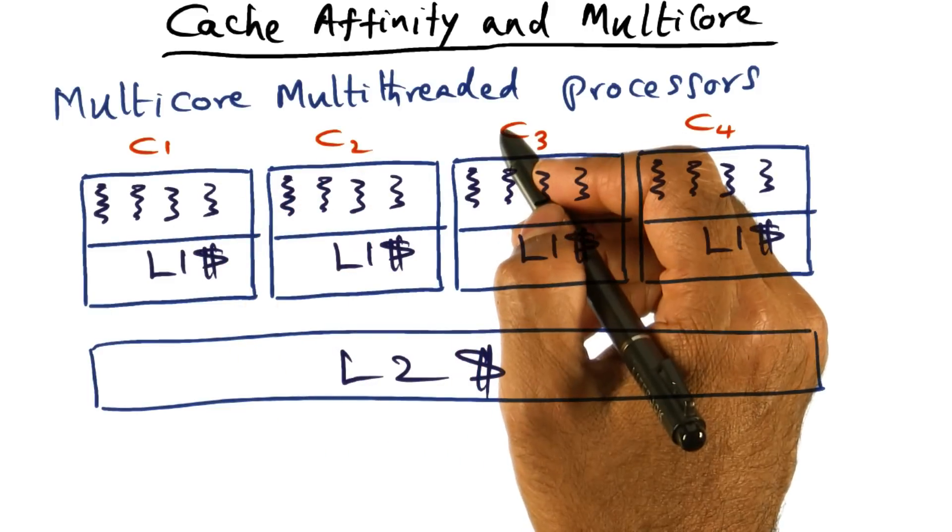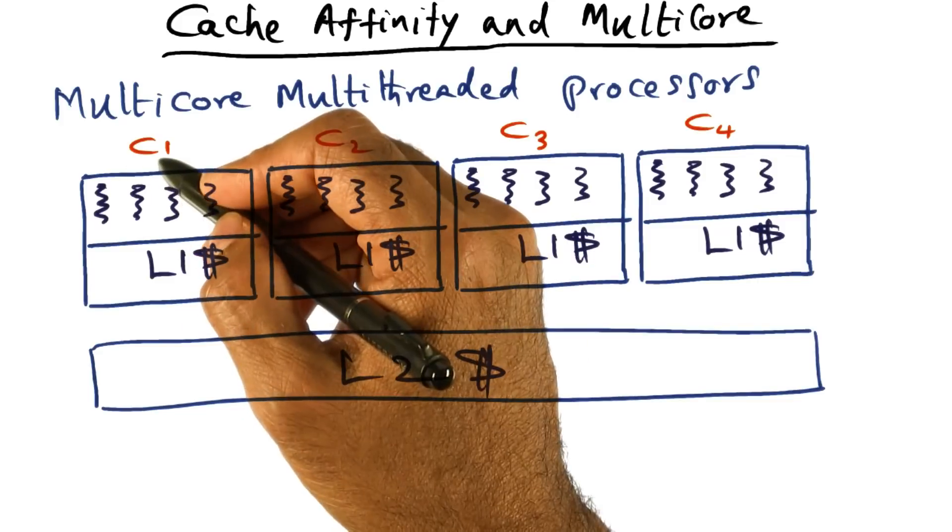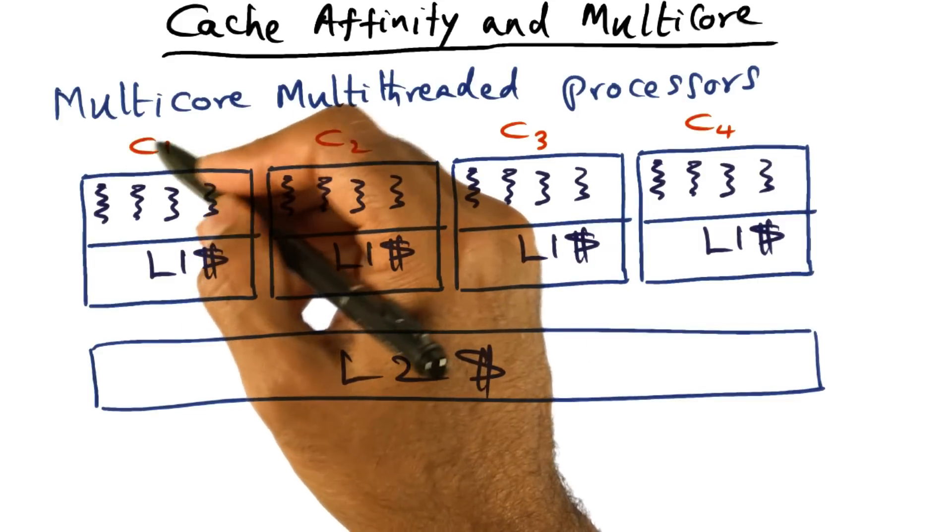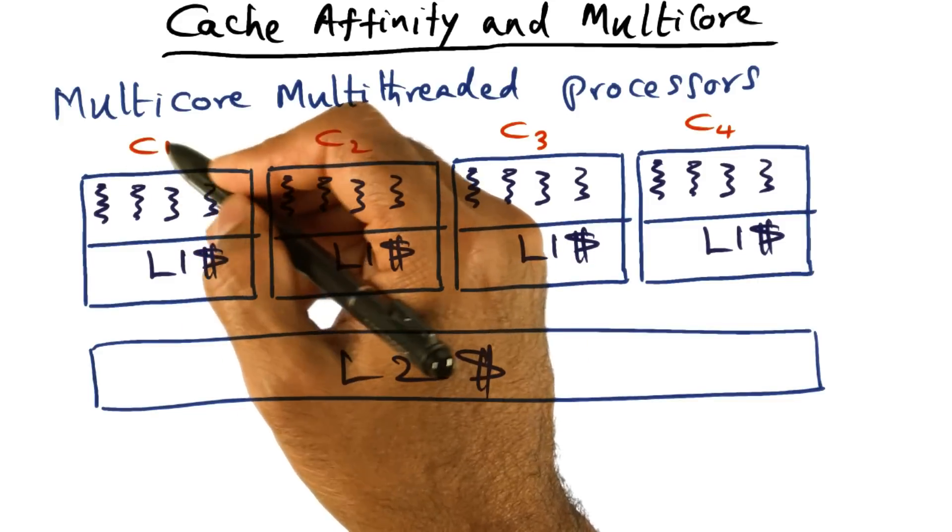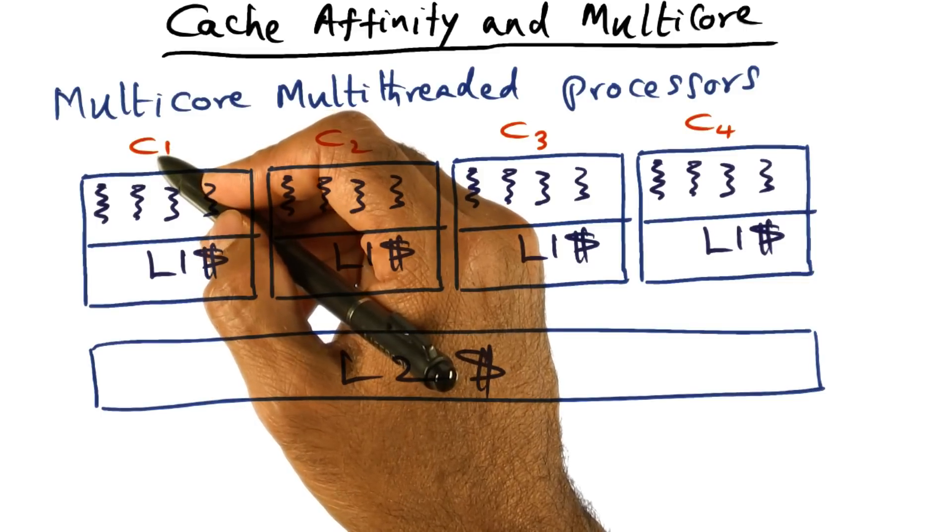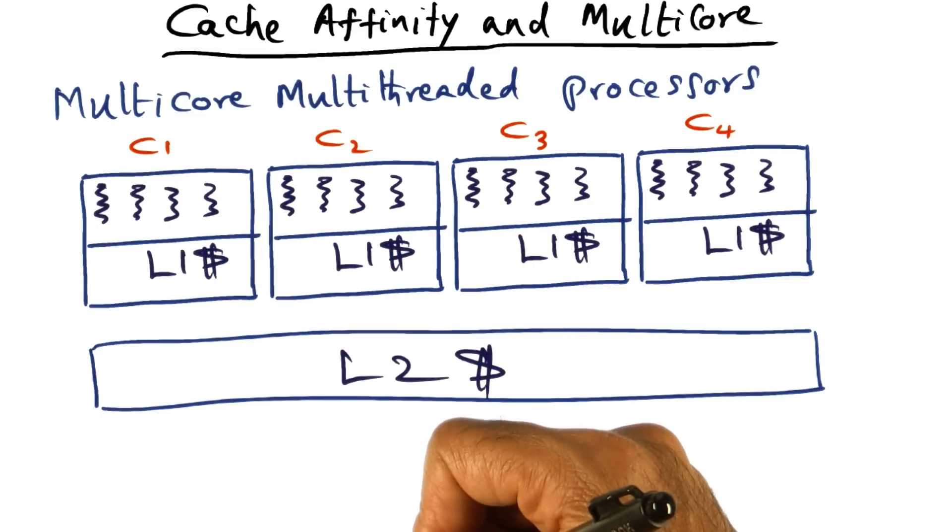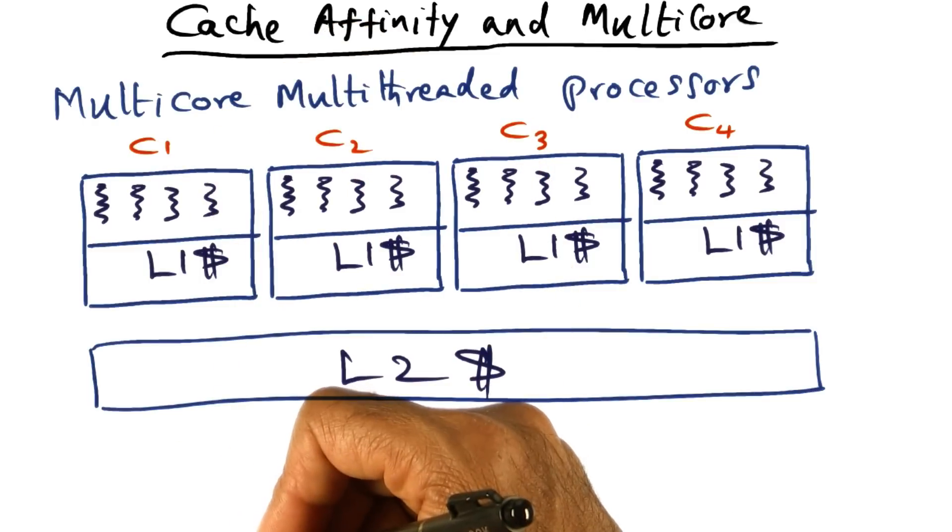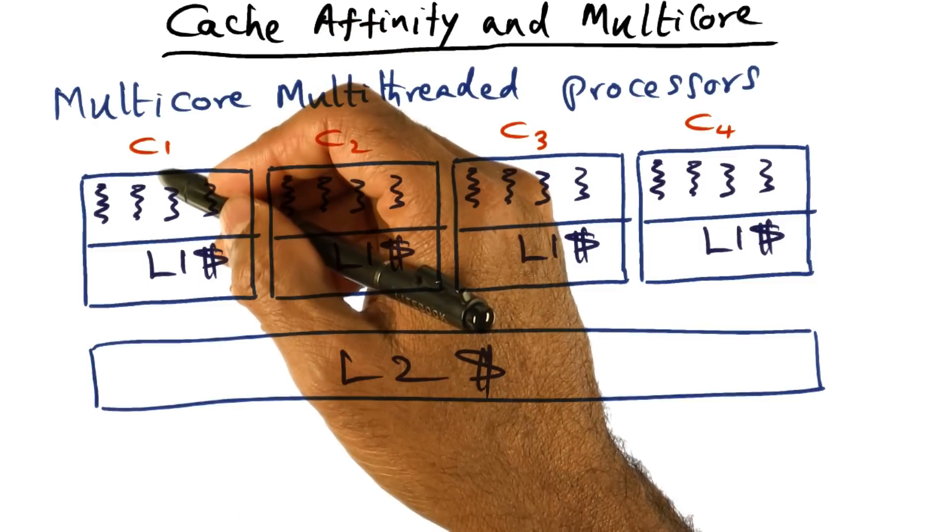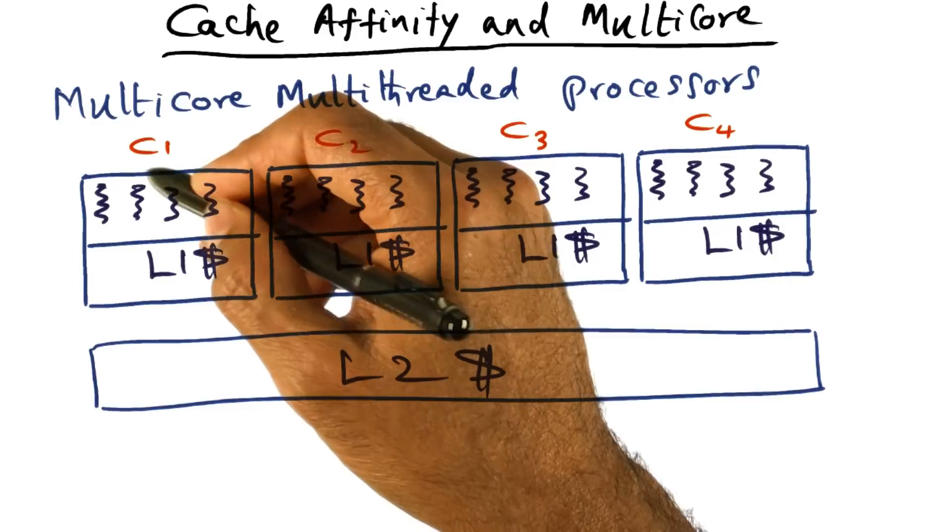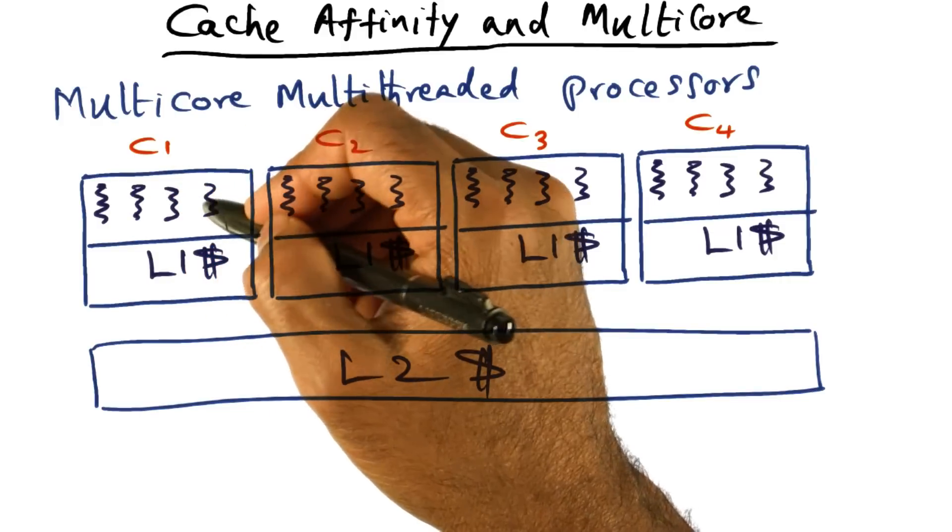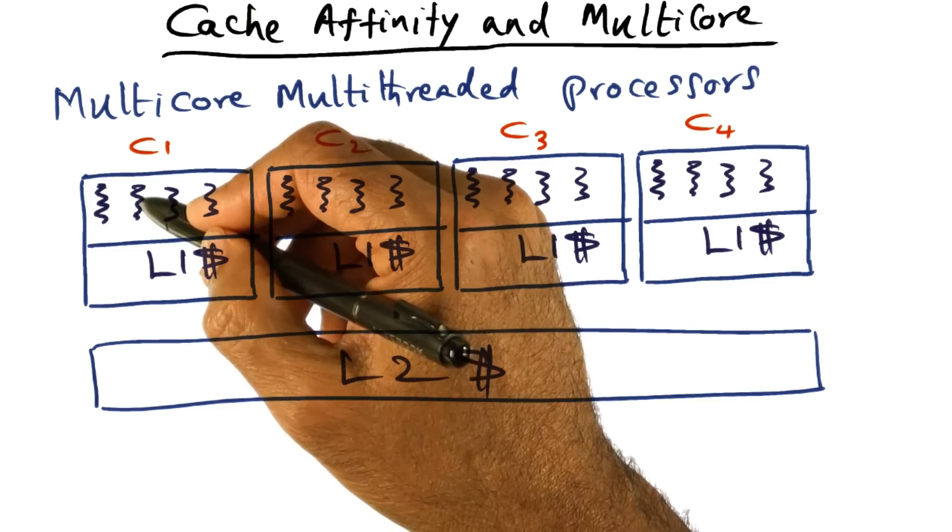What hardware multi-threading means is that if a thread that is currently running on a core C1 is experiencing a long latency operation, for instance, it misses in the cache and therefore has to go out to fetch the contents from memory, that's a long latency operation. In that case, the hardware may switch to one of the other threads and run those.